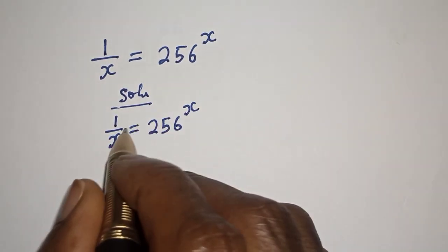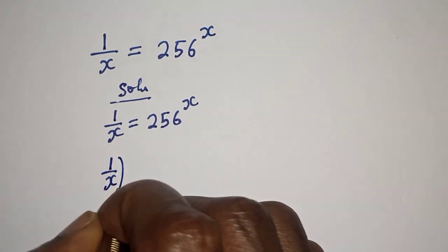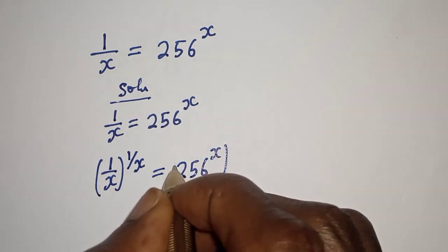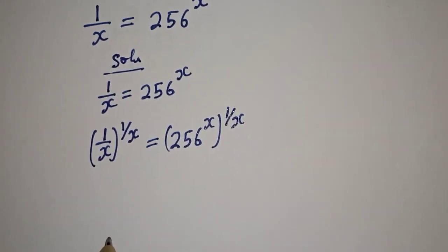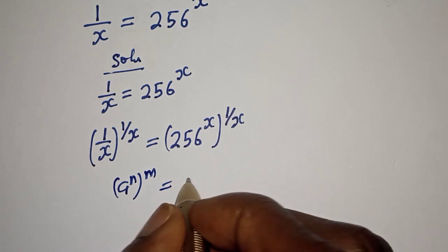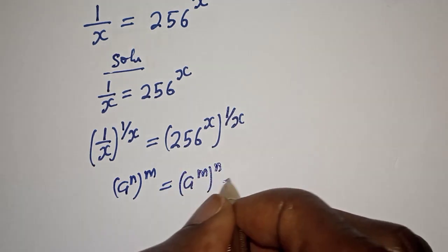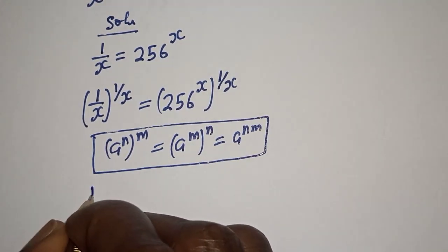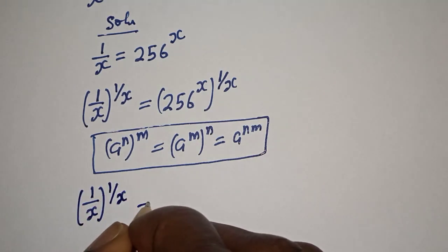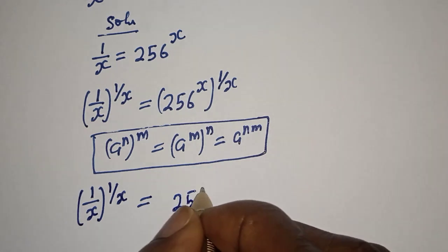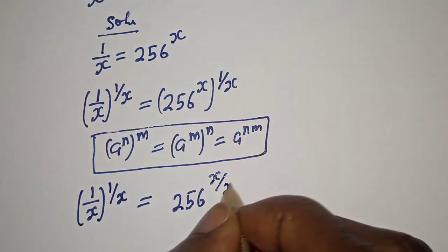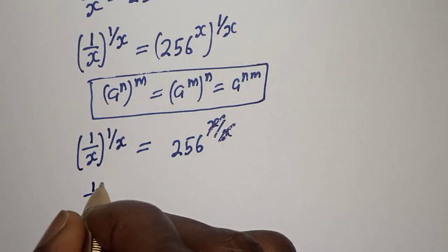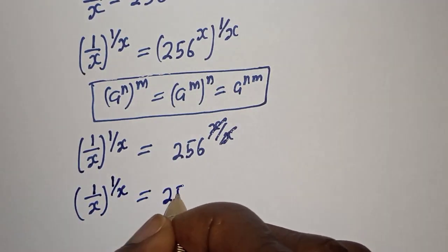Let's multiply the exponent of both sides by 1 over x. So 1 over s to the power of 1 over x is equal to 256 to the power of x to the power of 1 over x, which gives 256 to the power of x over x. Using the rule: a raised to power n to the power of m equals a raised to power nm. This cancels, giving 1 over s to the power of 1 over s is equal to 256.